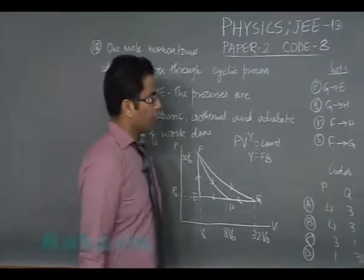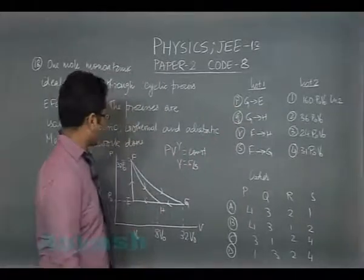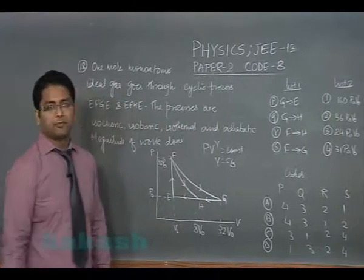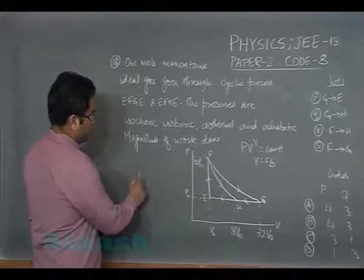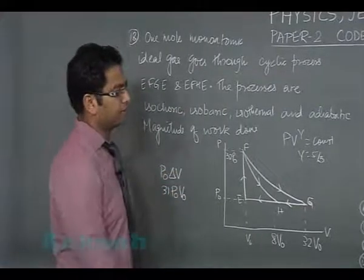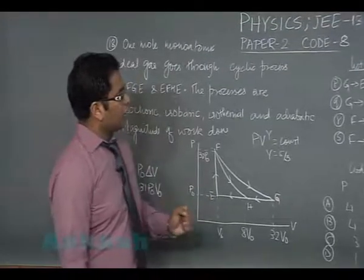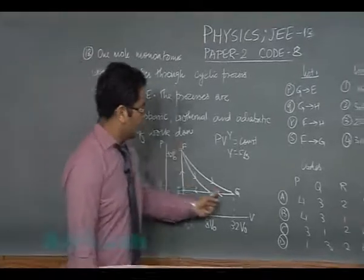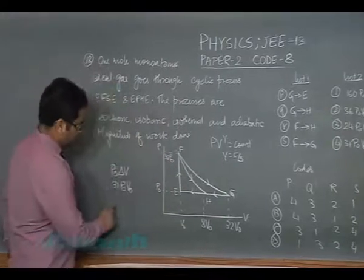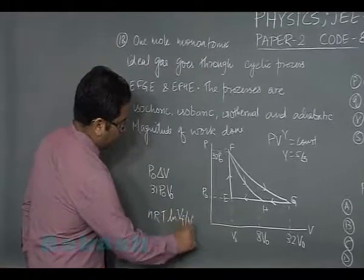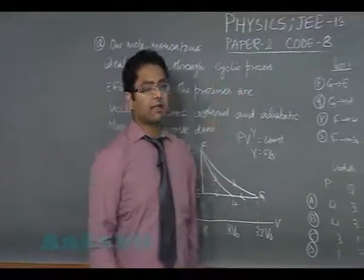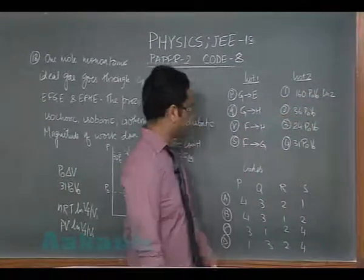Now for GE, the process GE is isobaric, and if I want to find the work done, quite obviously that's going to give P naught into delta V, and that's 31 P naught V naught. I'm writing the magnitude. Let's try to see option number S. FG is an isothermal process, so the amount of work done is NRT log VF by VI, in other words PV log VF by VI, which gives option number 1: 160 P naught V naught log 2.